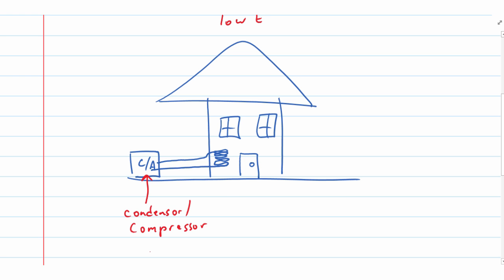A refrigerator works the same way. Instead of a house, imagine the refrigerator as the enclosed space. The compressor-condenser is built into a small compartment at the back of your refrigerator. If you've ever felt the air coming out from underneath the refrigerator, it feels warm — that's the exothermic condensation happening in the compressor. Somewhere built into the frame are coils where evaporation occurs, keeping the inside cool.